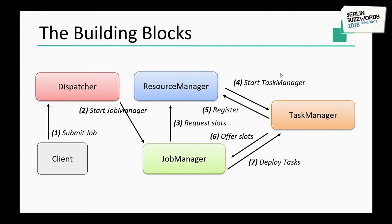From the client — the web UI or most commonly the CLI — you submit the job to the dispatcher. The dispatcher starts a job manager for this specific job. The job manager talks to the resource manager to ask for slots — for example, if the program specifies parallelism of 20, it asks for 20 slots. The resource manager talks to Yarn, Mesos, etc., to spawn task managers. Those task managers, when they start up, register with the resource manager. Eventually, the job manager can deploy tasks onto those task managers.